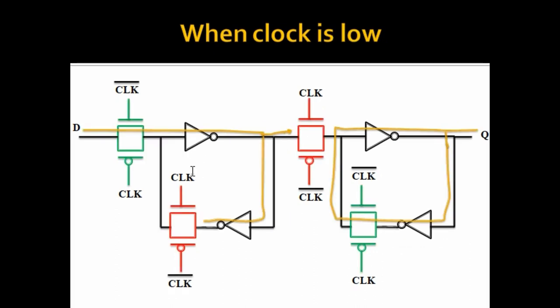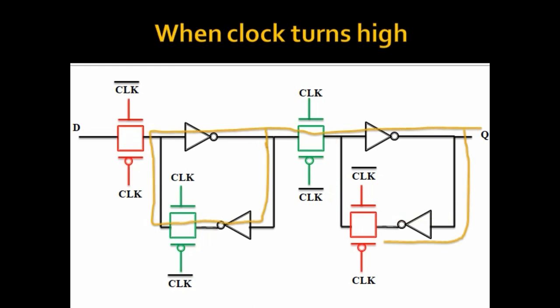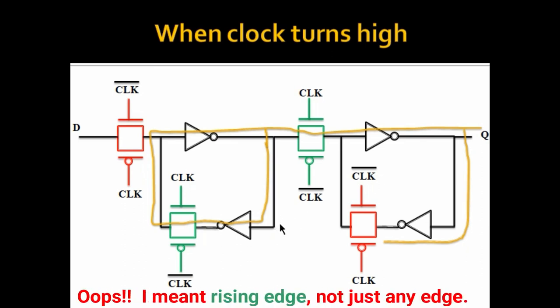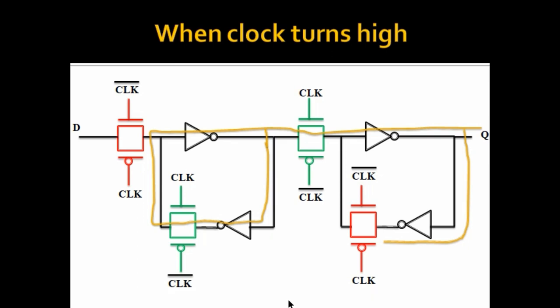So I hope you understood how a combination of two level sensitive devices gives one edge triggered device. When the clock level was low, the data was entering the device and stabilizing at the master latch output. When the clock turned high, new data stopped entering the device, and only the data which was stabilized — the data present when the clock was transitioning from 0 to 1 — is reflected at the output. Therefore this becomes an edge triggered device. The combination of one negative latch and one positive latch gives us one positive edge triggered device.